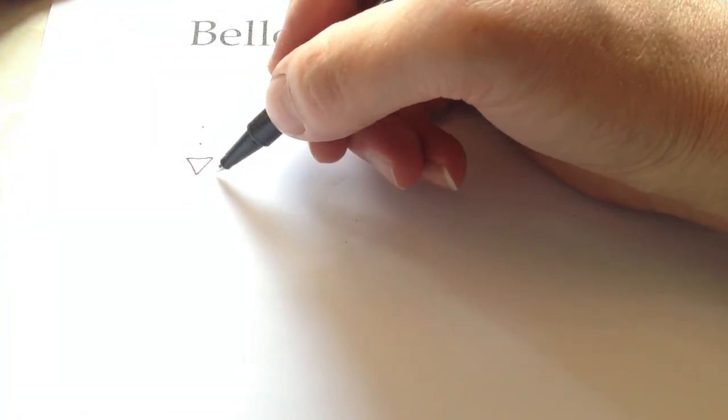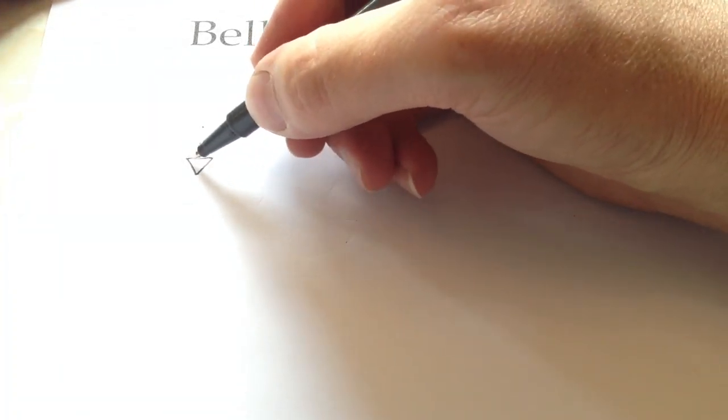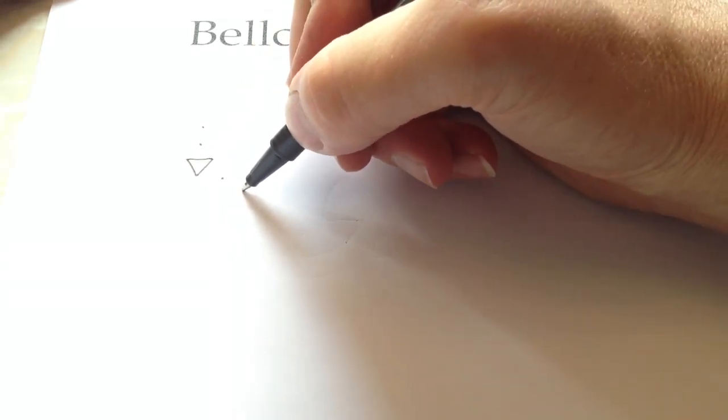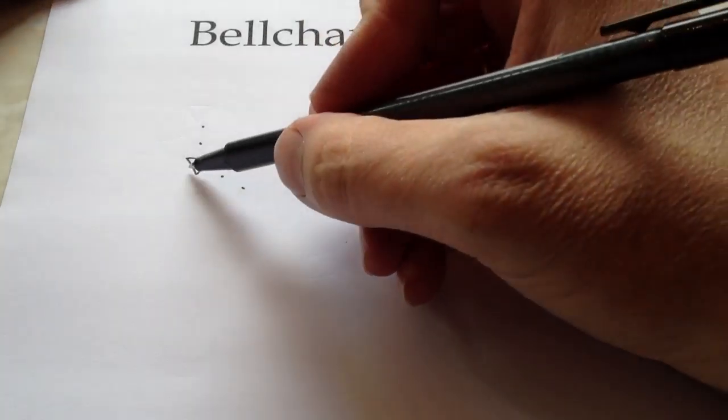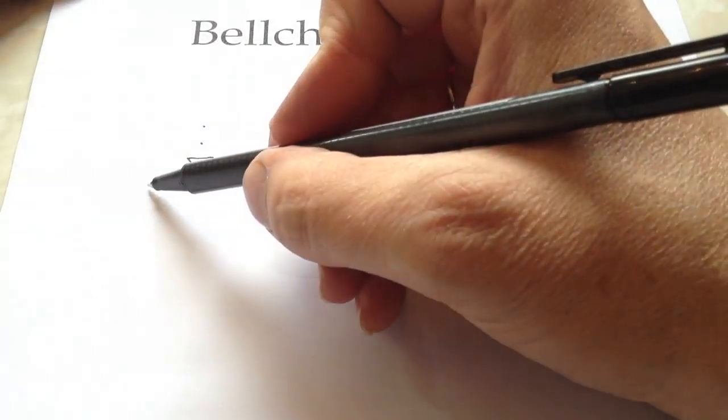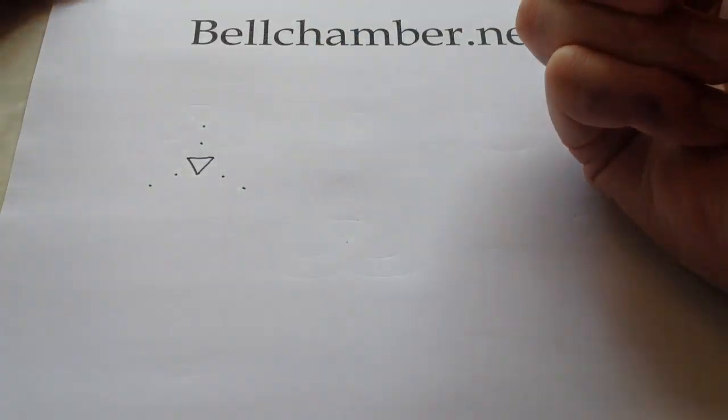From this angle here, this length here, draw one dot, and match the distance again. So, same here, we're going to draw another dot here, and another dot there.